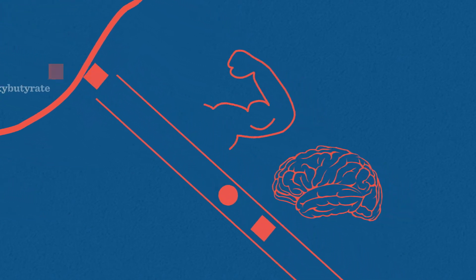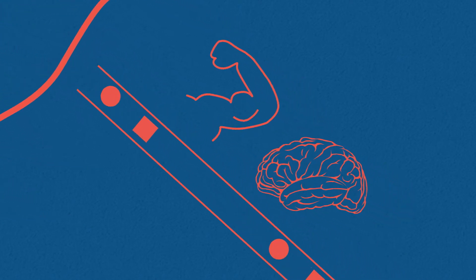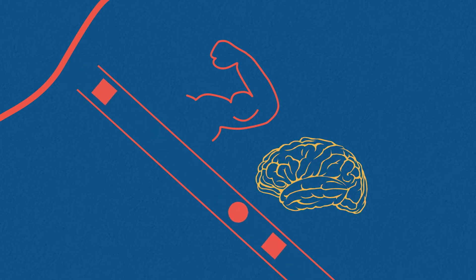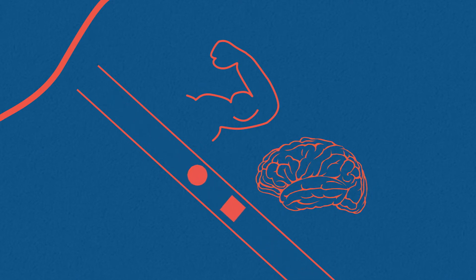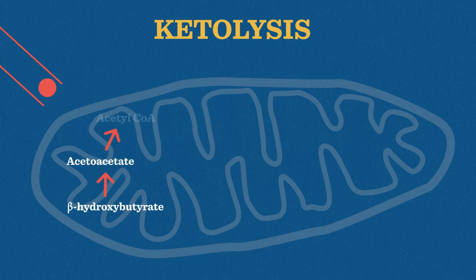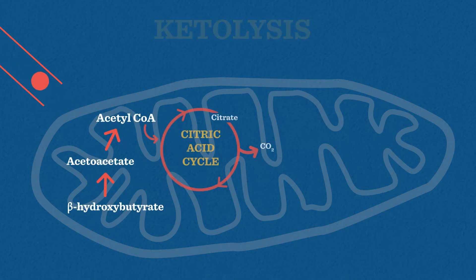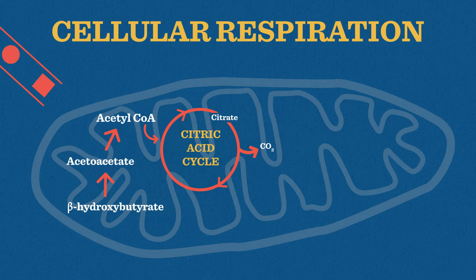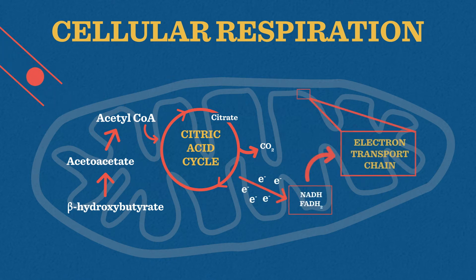Including muscles and the brain. Unlike fatty acids, ketones are able to cross the blood-brain barrier to directly provide energy for the brain, just like glucose. Once in their target cells, the ketones are converted back into acetyl-CoA, ready for use in the citric acid cycle to continue the supply of NADH and FADH2 to the electron transport chain to produce ATP.